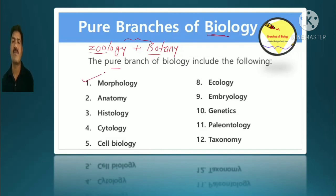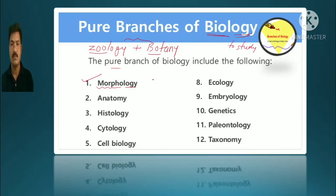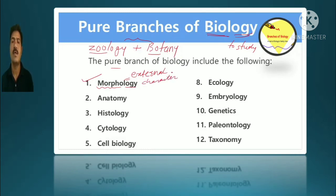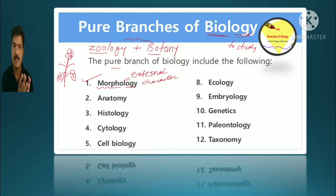Morphology means the study of any living organism's external characters. 'Logy' always means to study. Morphology is the study of external characters — how an animal looks from outside, its external appearance. For a plant, morphology covers leaf size, leaf arrangement, branch structure, and flower type.